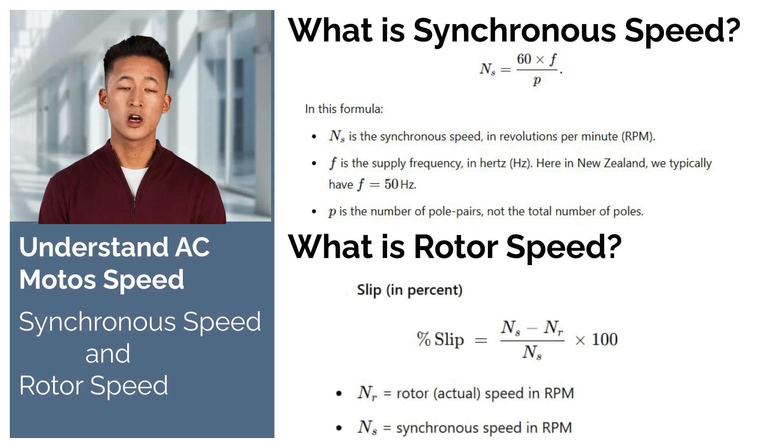Rotor speed, often called NR, refers to how fast the actual motor shaft, the rotor, is spinning.